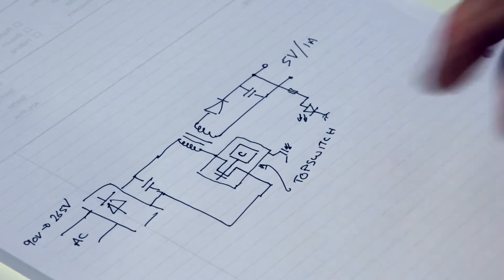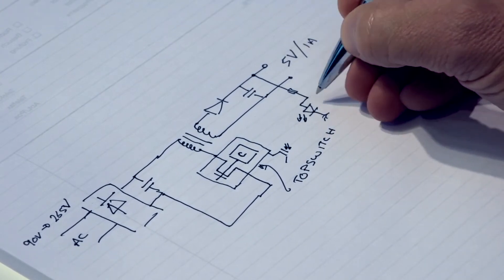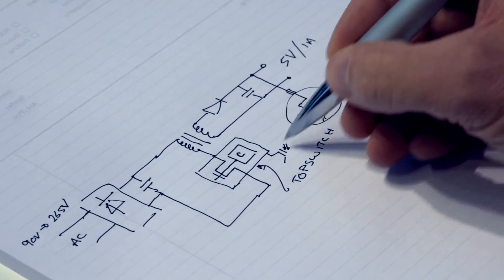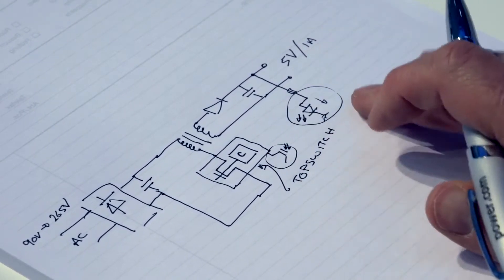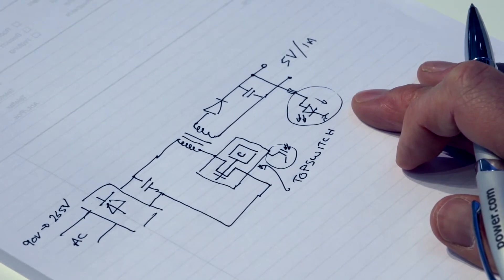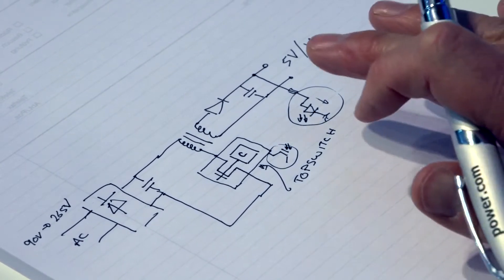The downside of this technique is that you have to bias the opto and you have to manage the other components around the opto and that tends to take current even when the power supply is not switching. So there's another way to do it.